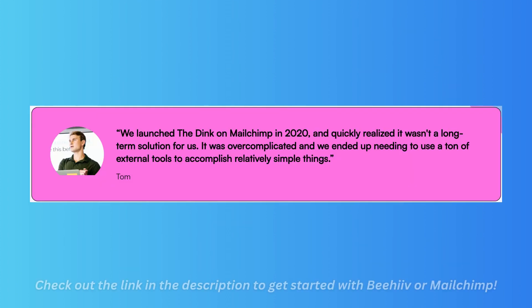Now let's look at reviews. One reviewer launched a newsletter on Mailchimp in 2020 and quickly realized it wasn't a long-term solution. It was over-complicated and required many external tools to accomplish relatively simple things. Mailchimp is complex — you can do a lot with it, but it's hard to figure out. Within Beehiiv, those same things are very easy and user-friendly.